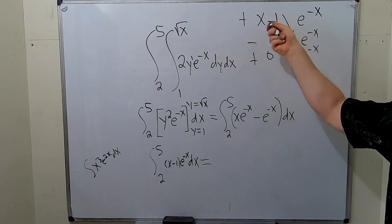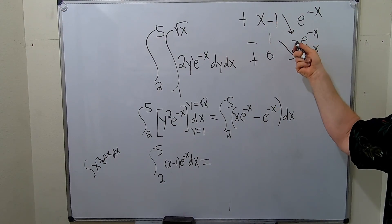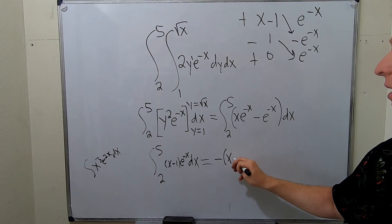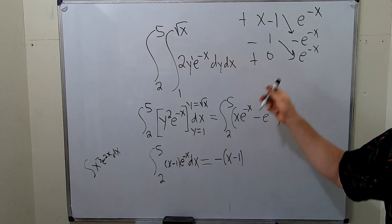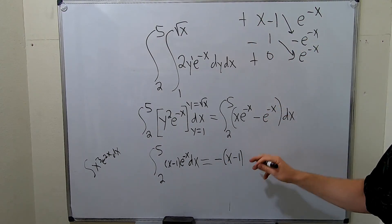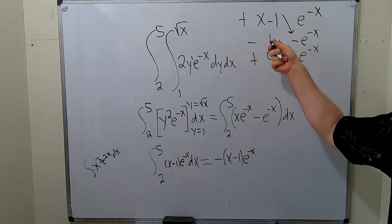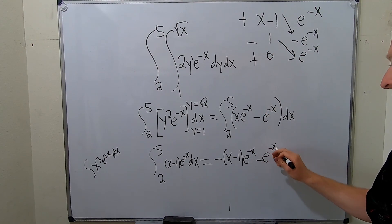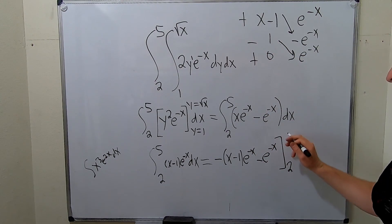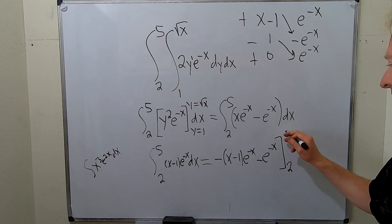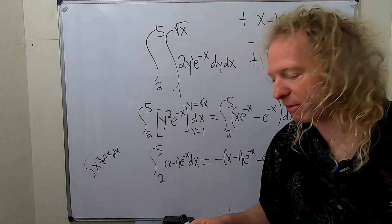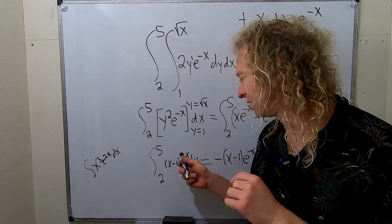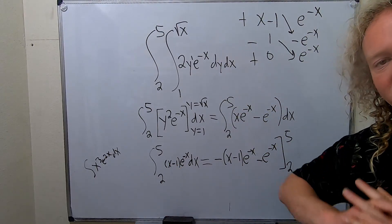Let's go over that again. We first integrated with respect to y, treating all x's as constants, so we got 2y squared over 2 — the 2s cancelled. This term is a constant, so it hangs out. Because we integrated with respect to y and it was a definite integral, our limits are y values: y equals 1 to y equals square root of x. Notice the double bracket for added clarity.